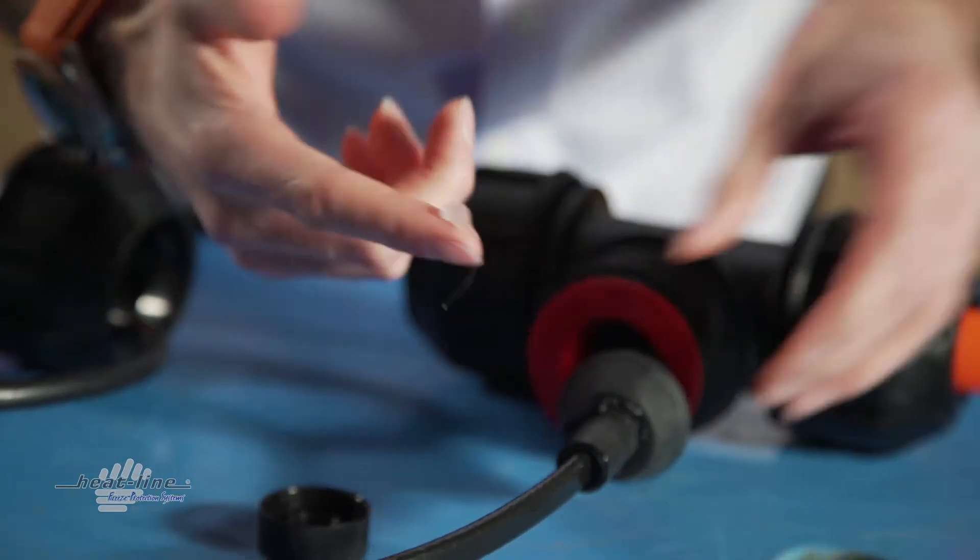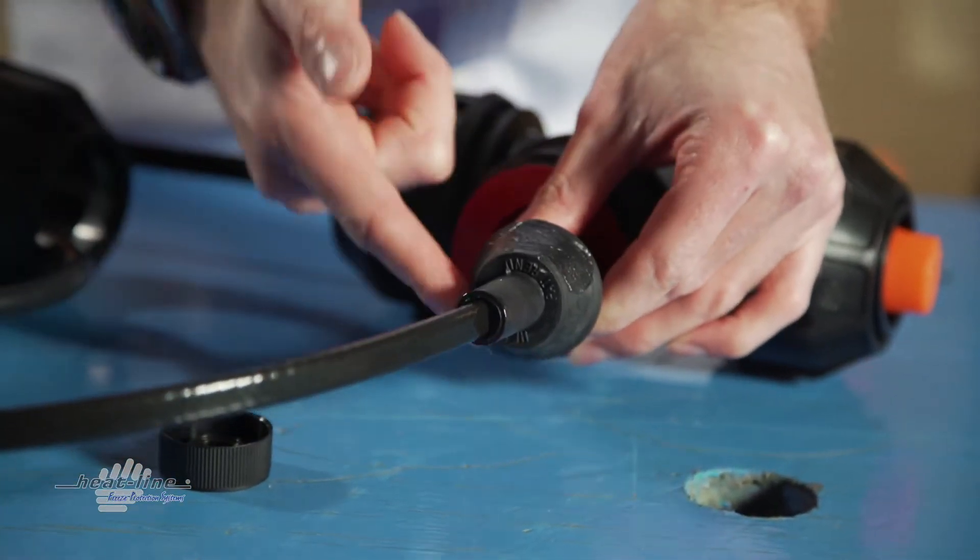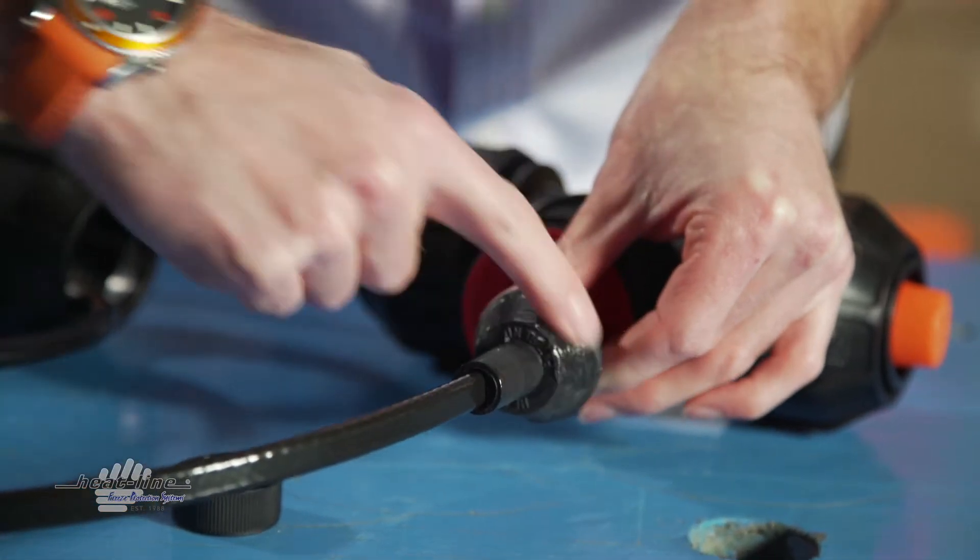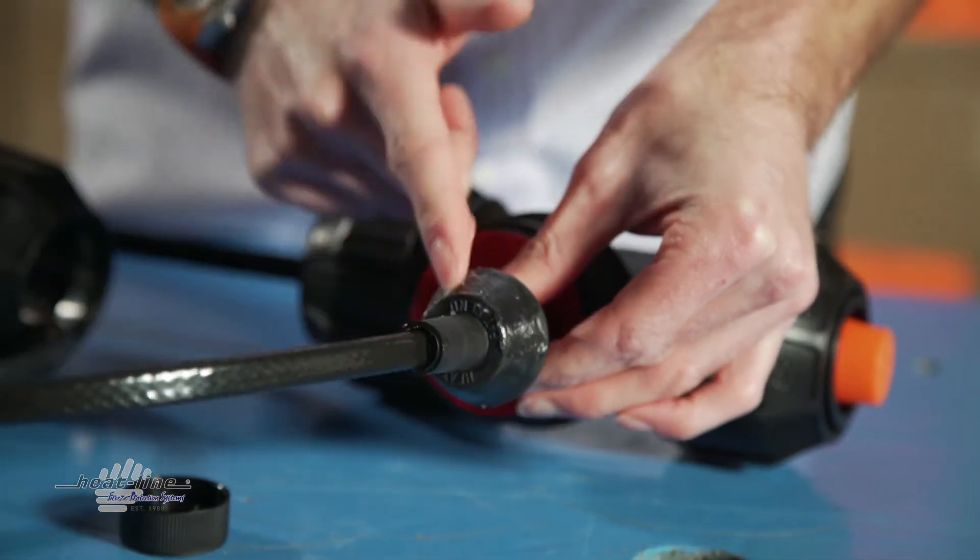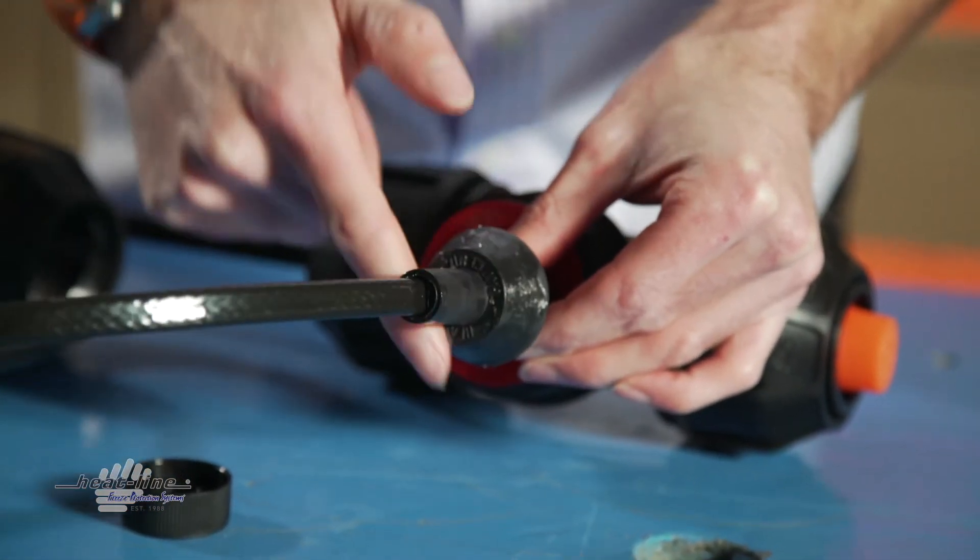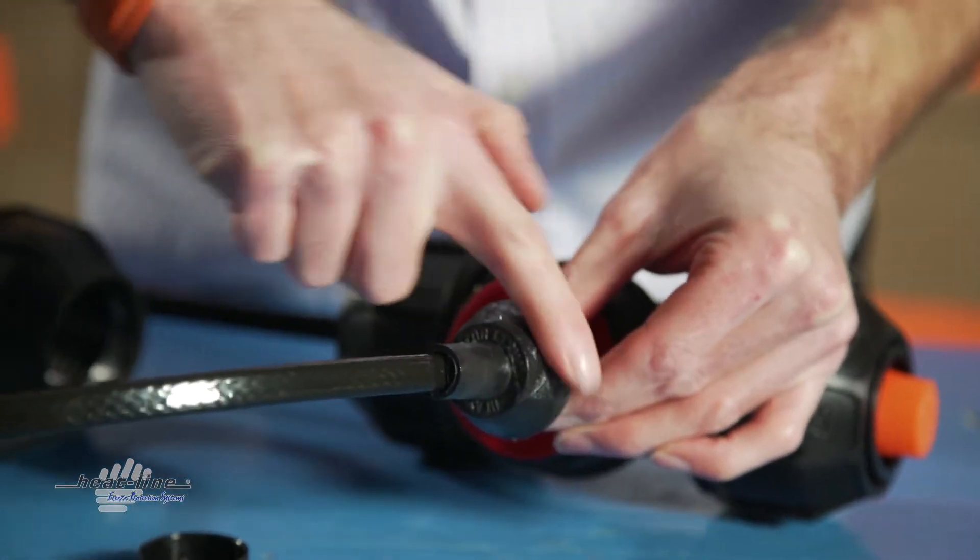You will note that the lubricant is being applied to all surfaces that the red reducing cone will contact. This will reduce friction, thus preventing twisting of the heat line grommet when adding compression.